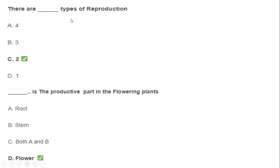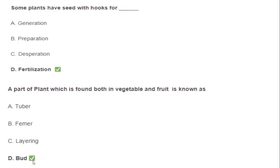There are two types of reproduction. The reproductive part of the flowering plants is the flower. Some plants have seeds with hooks for fertilization.